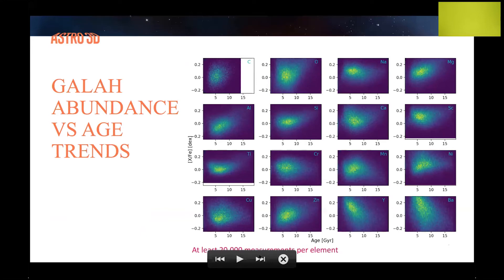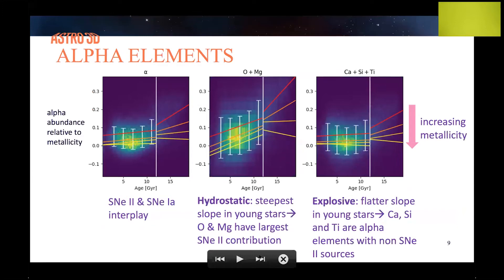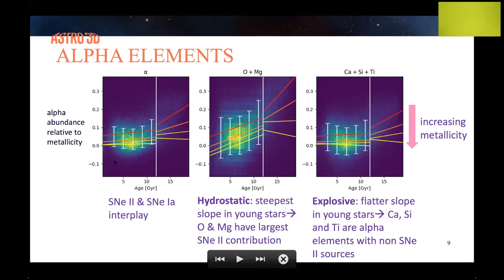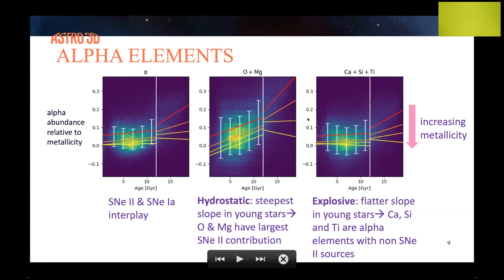I'll briefly talk about the alpha elements — a reminder that alpha elements are mainly formed in core-collapse supernovae. The y-axis is the abundance of the elements relative to iron, which is metallicity produced by type Ia supernovae. Looking at the ratio between these two types of elements gives us an idea of how the two supernovae types interplay in the galaxy. In the early universe we see relatively high alpha abundance relative to iron, meaning more type II supernovae. Moving forward to the more recent galaxy, the ratio goes down slowly over time due to the onset of type Ia supernovae.